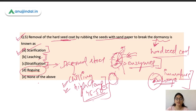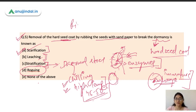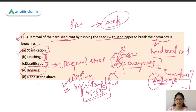Rogging is not related to breaking seed dormancy. Rogging means visiting a crop field and removing off-type material — for example, unwanted rice tillers, external crops growing in the field, or weeds. Essentially, it is the removal of weeds or off-type crop material from the field.